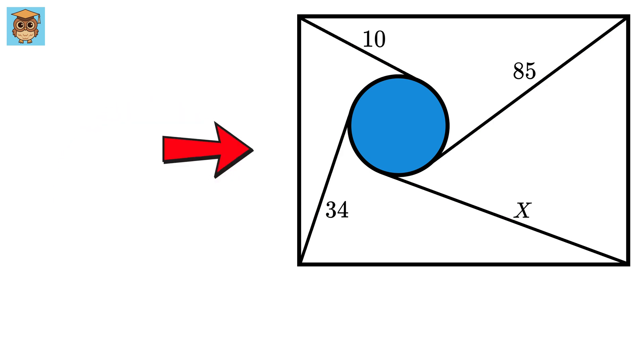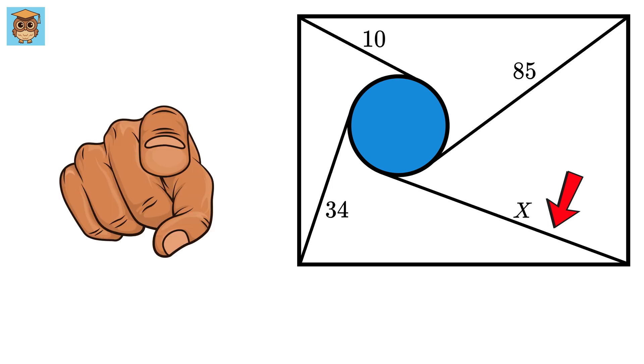Okay, we have a rectangle here, and inside this rectangle we have a circle. We have four tangents drawn from the four vertices of this rectangle, and their lengths are given except for this one, which we are supposed to find. So, can you solve it?